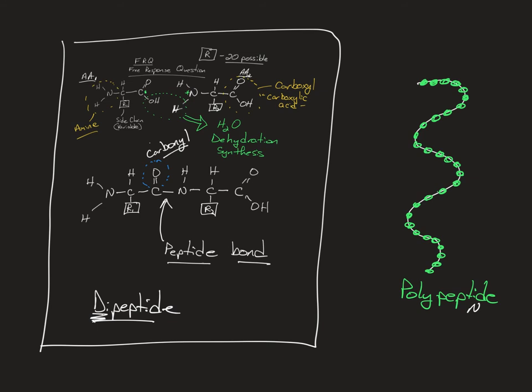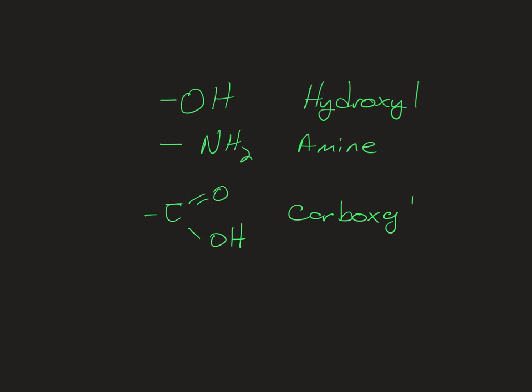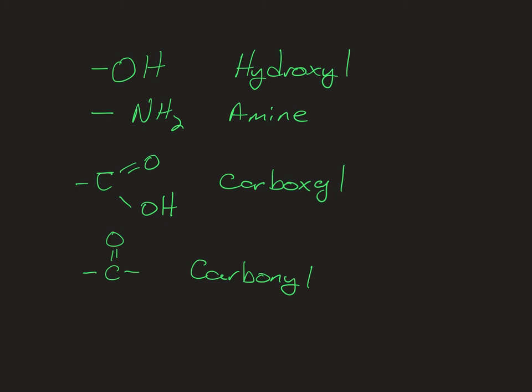What are the functional groups we have to know? They're in a video. They should be in your notes. But one is a hydroxyl. One is an amine, NH2. One is a carboxyl, which is C double bond O, OH. This is hydroxyl, this is amine, this is carboxyl. Please make sure you're writing these down if you don't have them. C double bond O connected to something is called a carbonyl. SH is sulfhydryl.